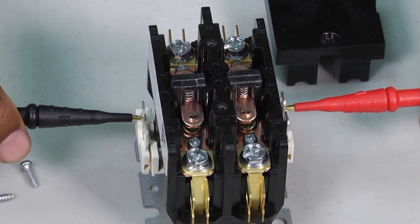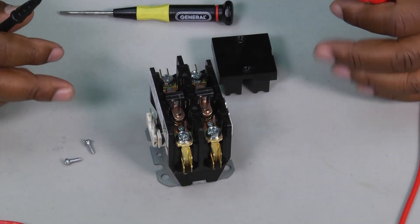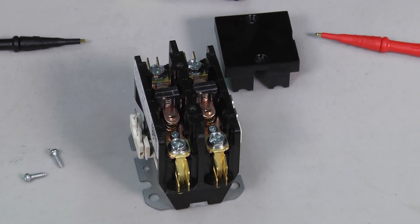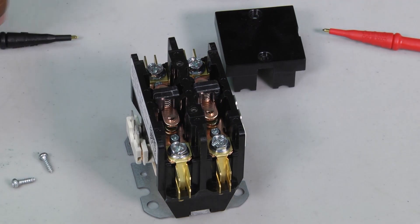Now if it was hooked to a system and I had it hooked to a circuit board or control board, I could send voltage there. That would create a magnetic field and then draw that contactor in, and then electricity could pass through.